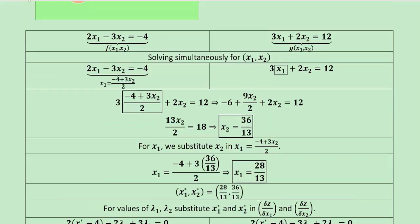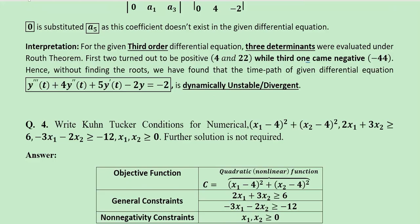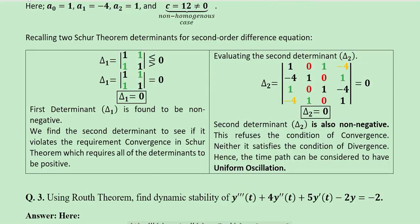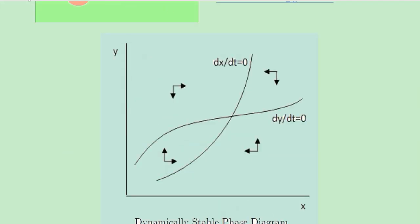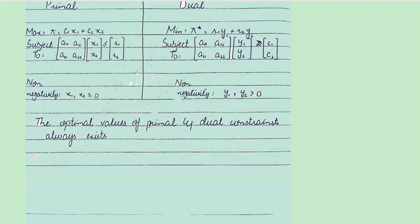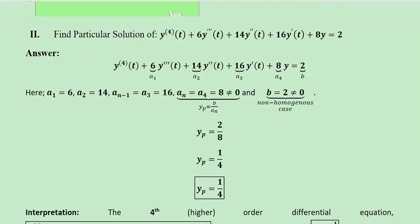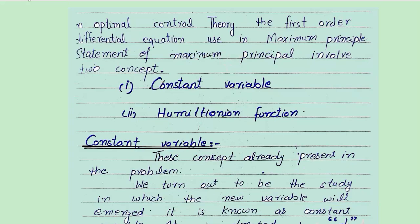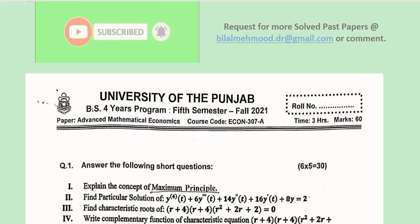This was the final question based on Kuhn-Tucker conditions. Before that we had the Routh theorem for dynamic stability of a differential equation, and the Schur theorem for dynamic stability of a difference equation. There were six short questions with numerical and theoretical solutions — all solved here. This was the suggested solution of ECON 307, Advanced Mathematical Economics, of the affiliated colleges of the University of the Punjab. I hope this will benefit you in preparation. Thank you.